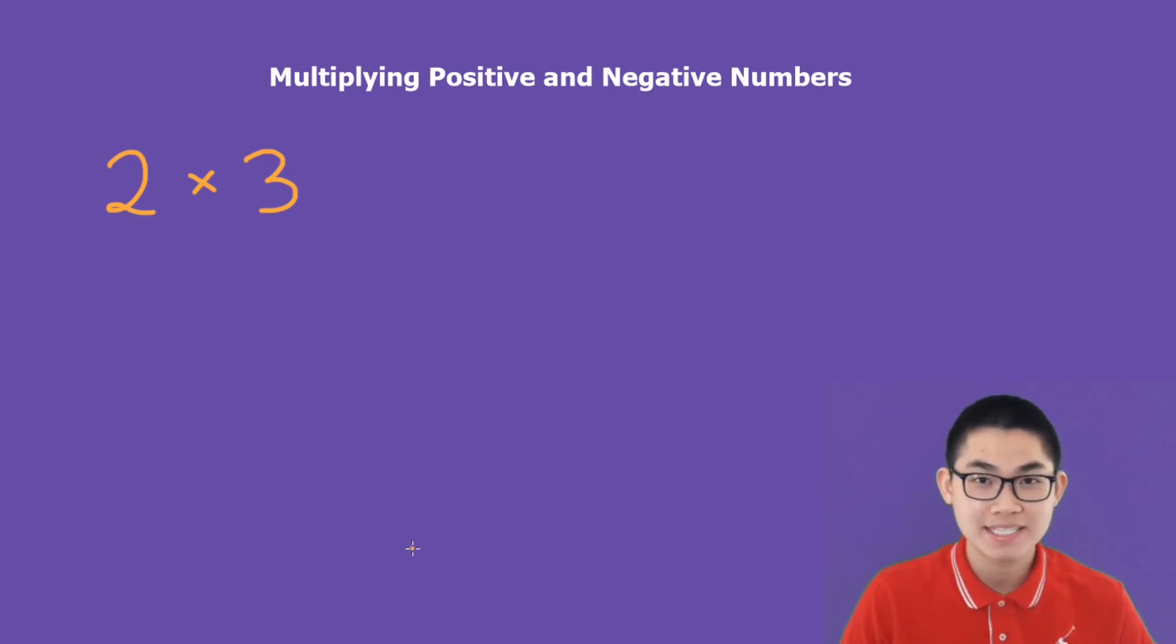So let's start at the basics. We have 2 times 3, but what exactly does that mean? This means we take 2 plus 2 plus 2 three times, as you can see. So 2 plus 2 is 4, 4 plus 2 is 6.